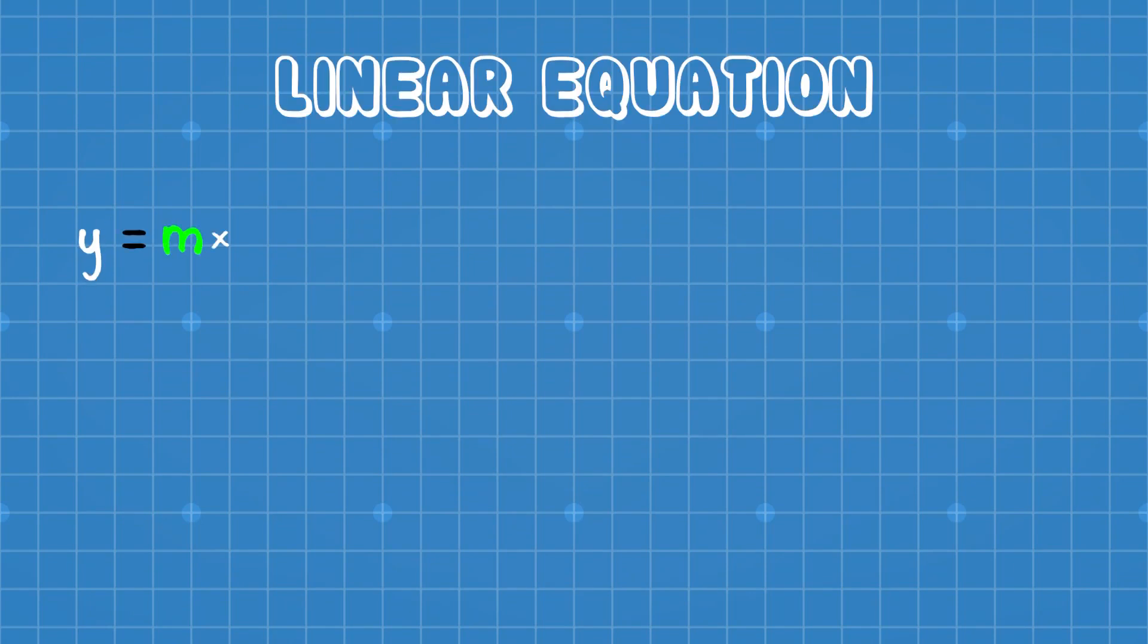Linear equation y equals mx plus b is the most common way to show an equation of a line, where m is the slope and b is the point where the line intersects the y-axis.